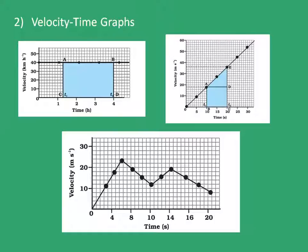What information can we find out from velocity time graphs? The first information is whether the velocity is constant or changing with respect to time. In the first example the velocity is constant. In the second example it is continuously increasing with a constant acceleration, and in the third example it is variable with different accelerations at different intervals of time.